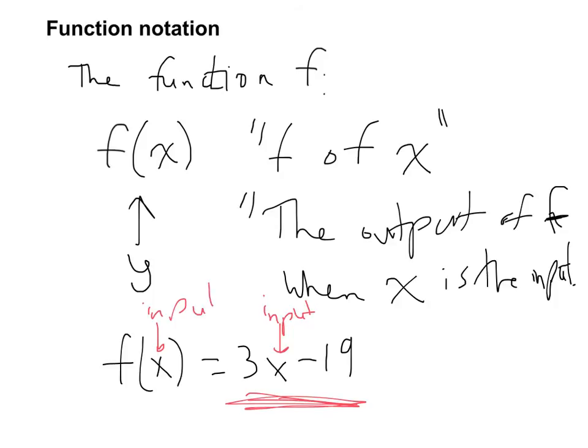But when you see this whole thing, f of x, it represents the output. Okay? So a couple other things. I know it gets a little sloppy there. But when you're looking at something like f of 1, that refers to the output when x is 1.